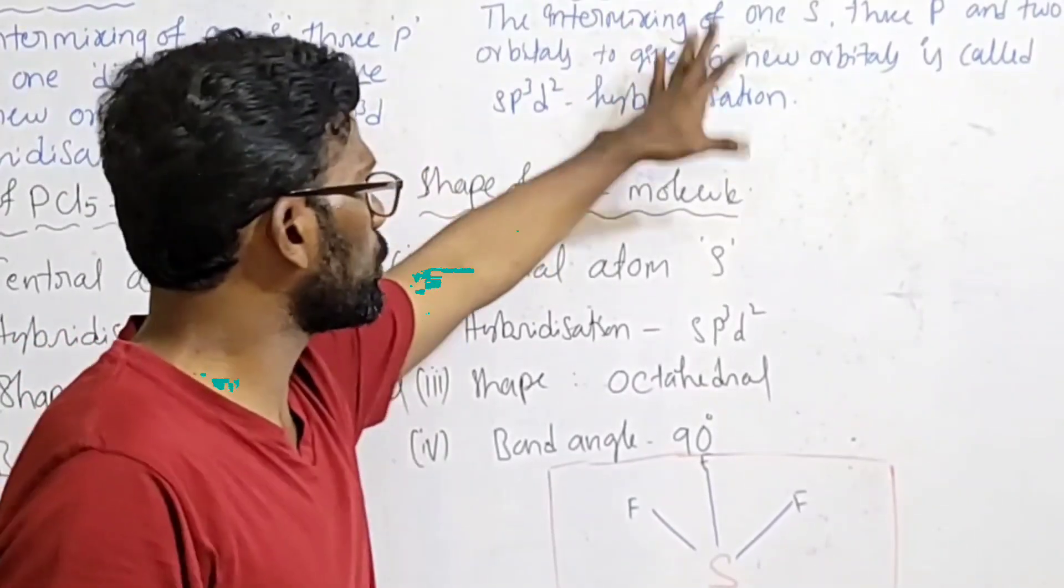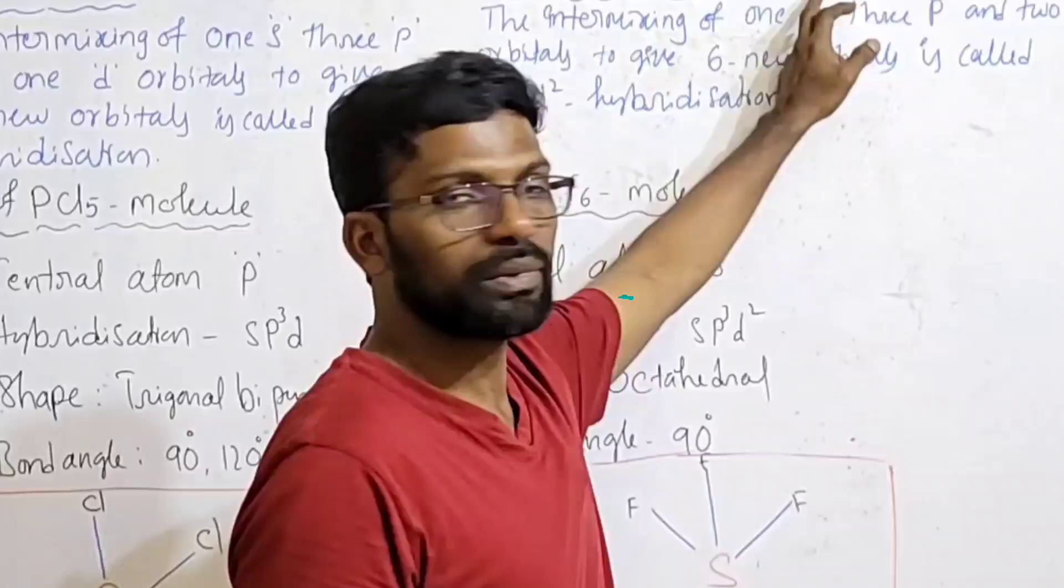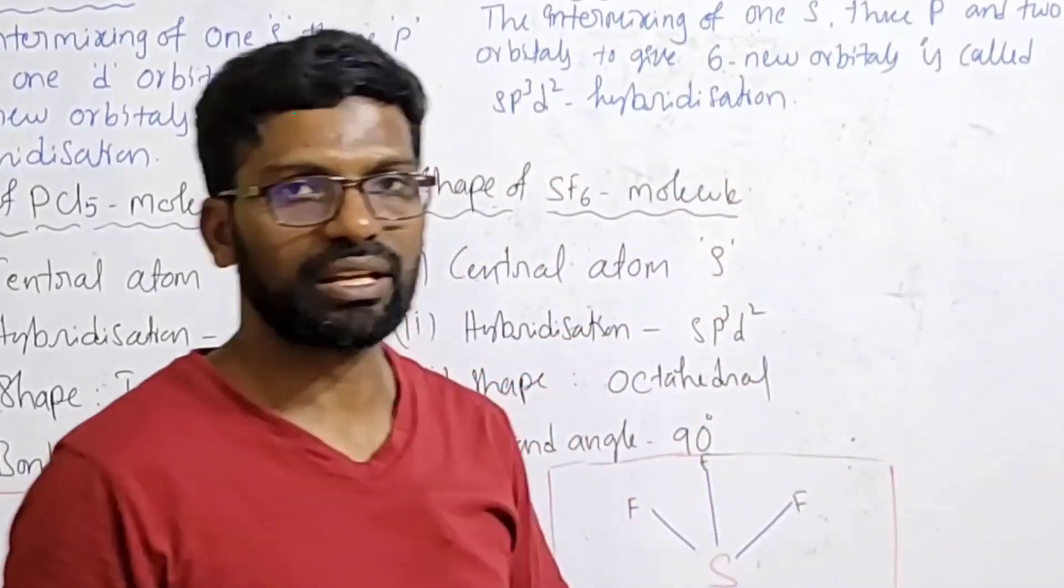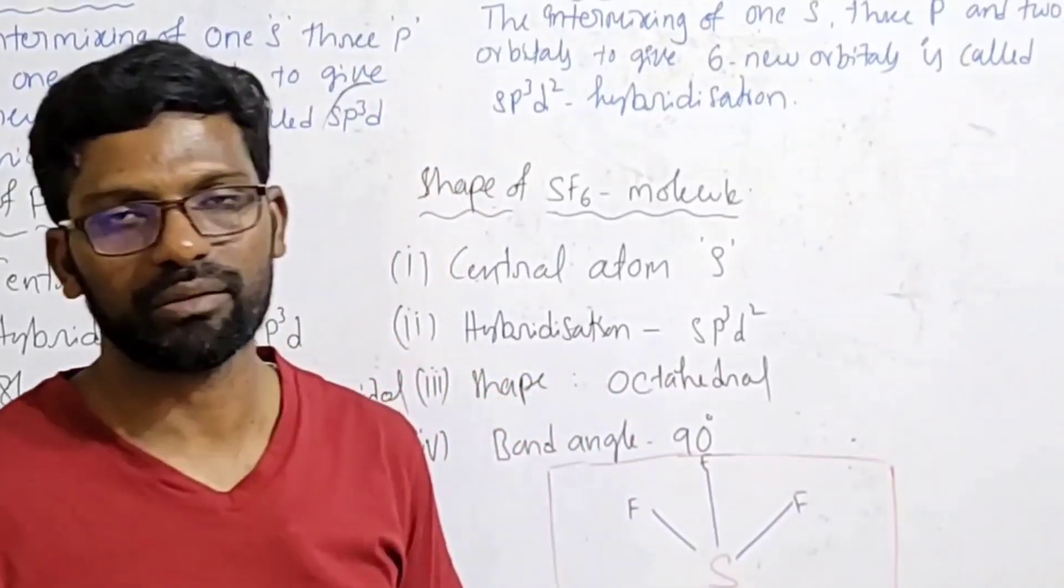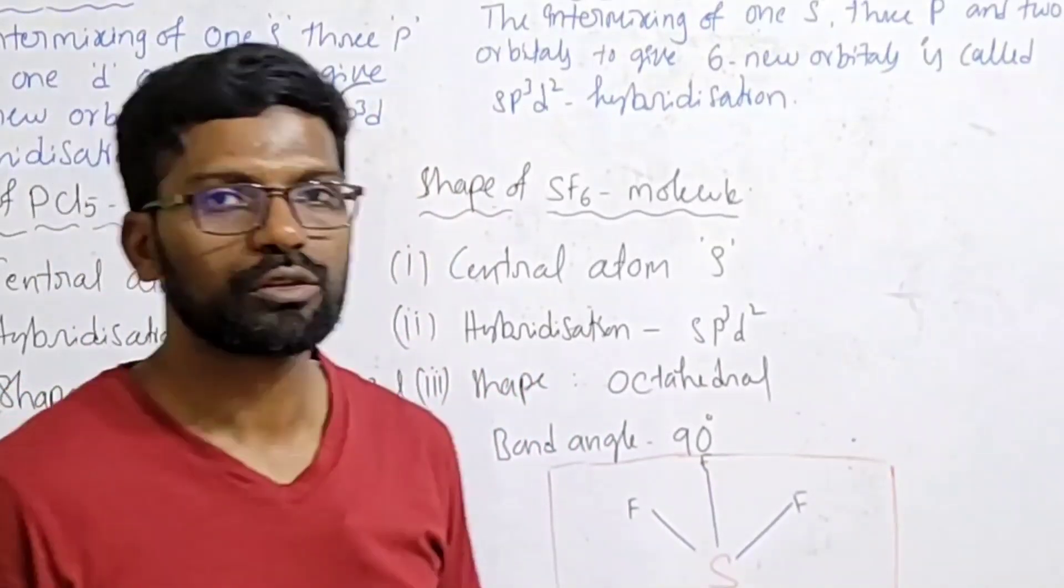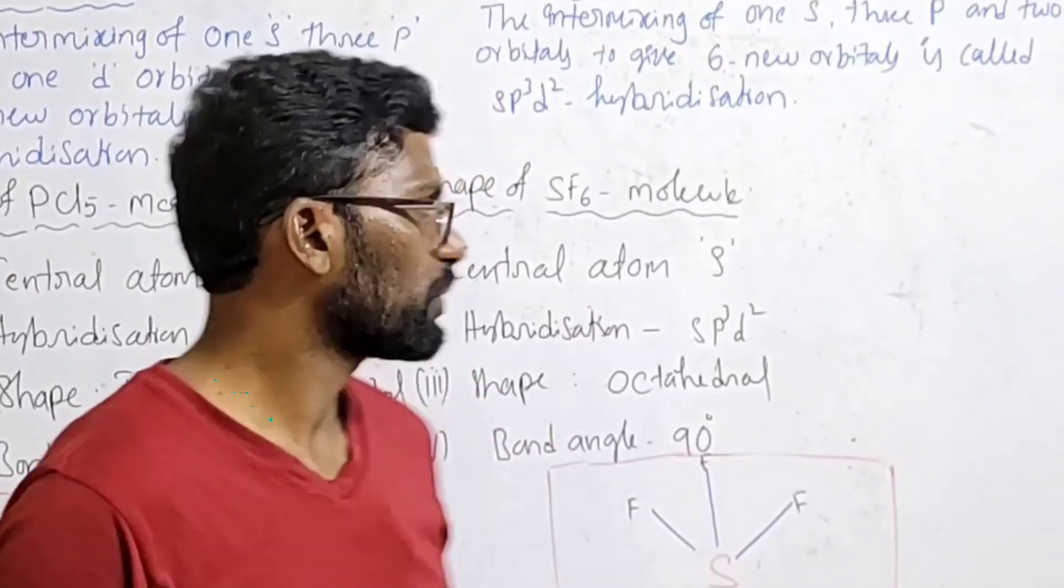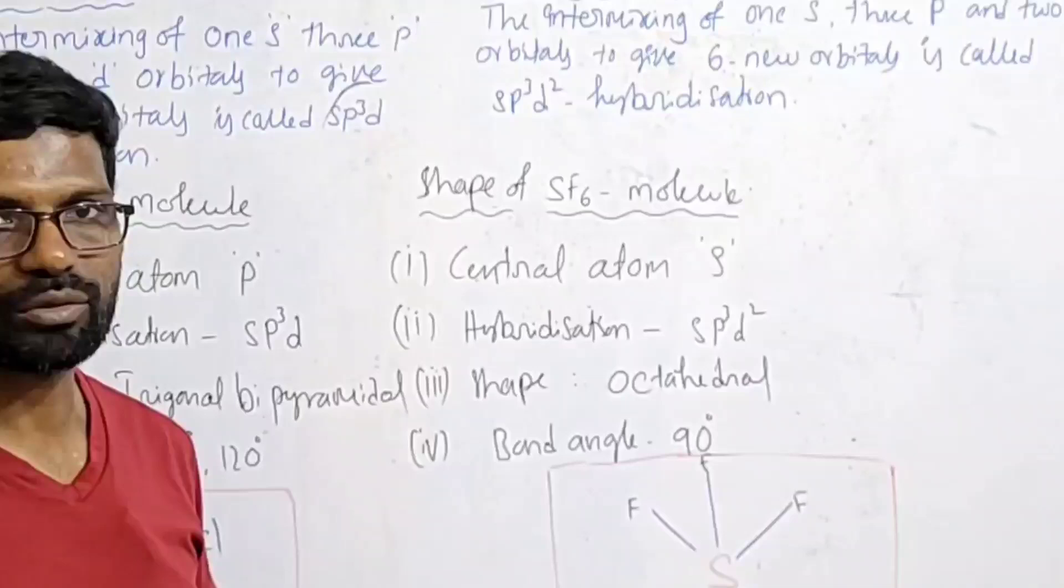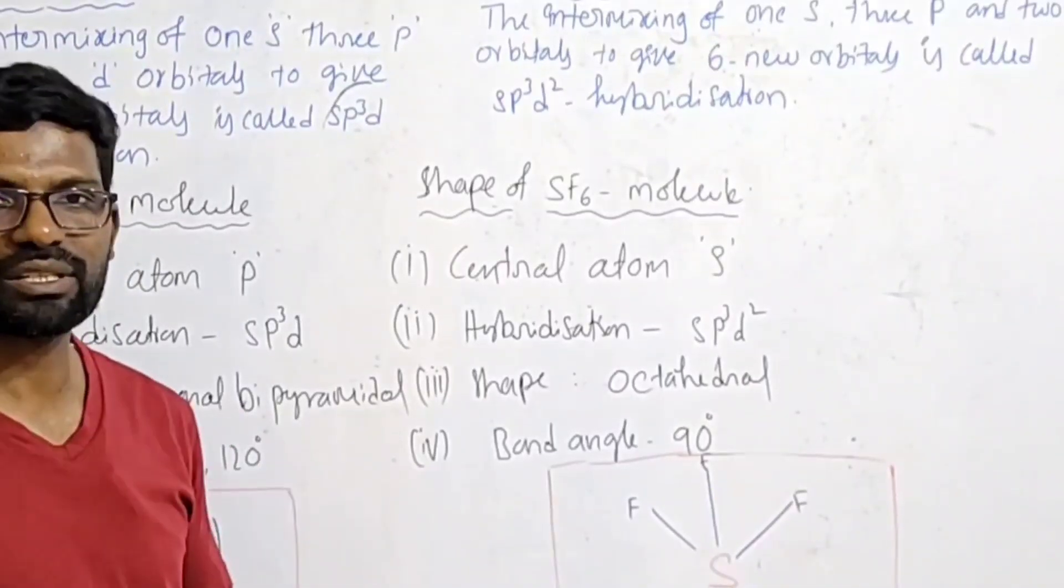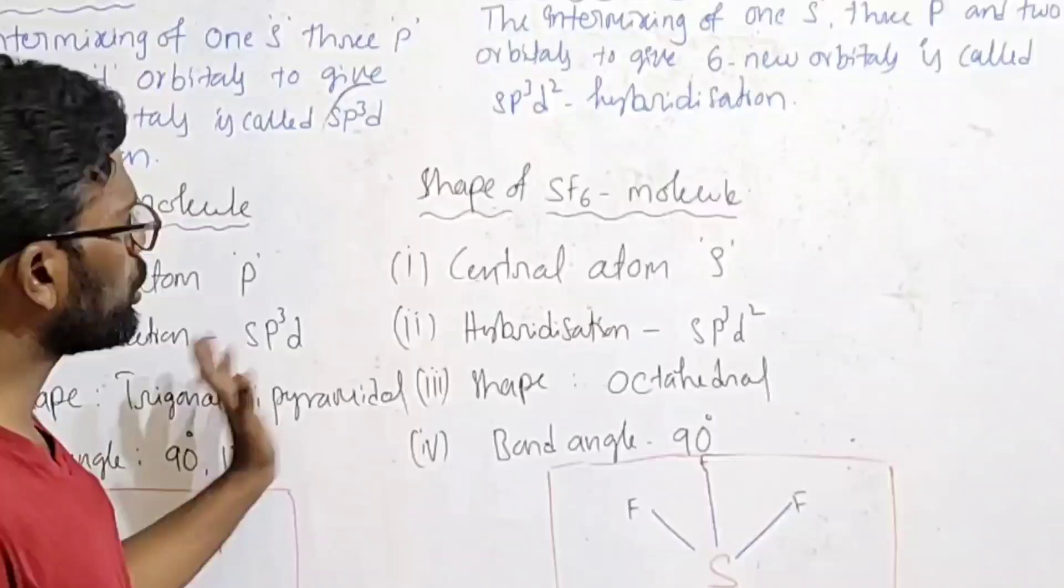Second question: explain sp3d2 hybridization with an example - explain the shape of SF6 molecule, sulfur hexafluoride molecule. These two questions can be answered together as an 8 mark question, or individually as 4 mark questions each.